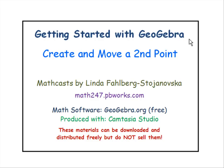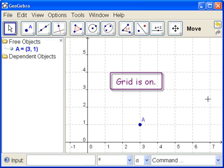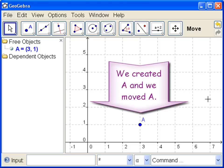In this tutorial we create another free point and show that we can move it separately from the free point we created in the previous tutorial. In our previous tutorials we turned on the grid and we created a free point A and we moved the free point A.